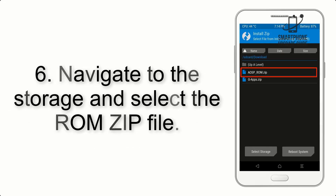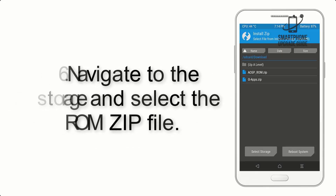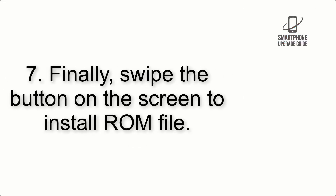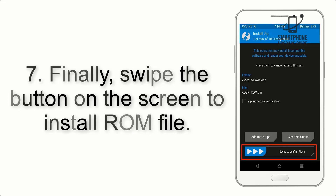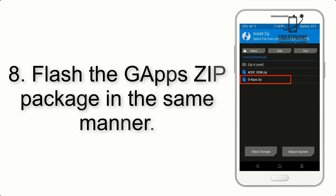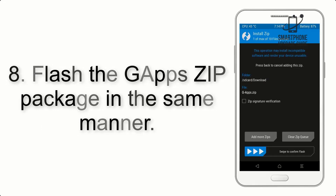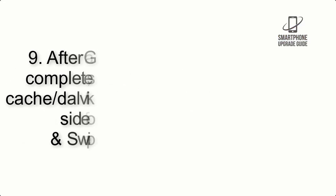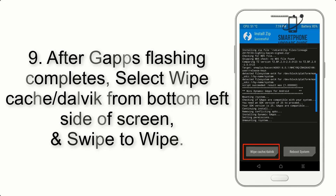Step 5: Go back to the recovery main screen and tap on the Install button. Step 6: Navigate to the storage and select the ROM zip file. Step 7: Finally, swipe the button on the screen to install the ROM file. Step 8: Flash the GApps zip package in the same manner.